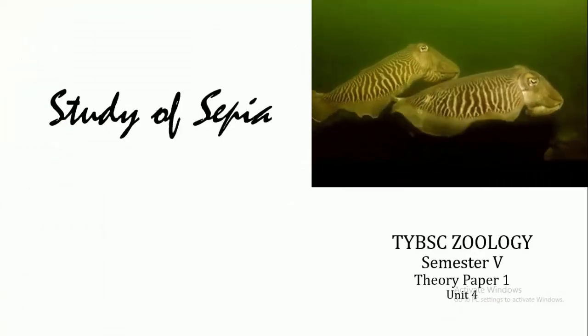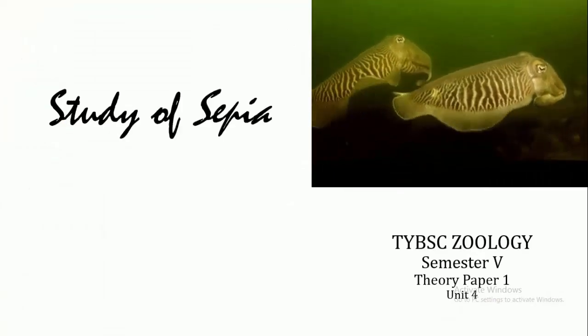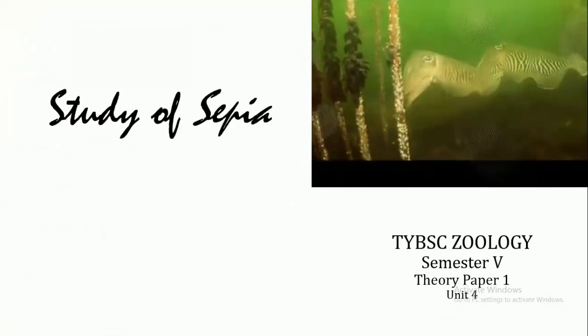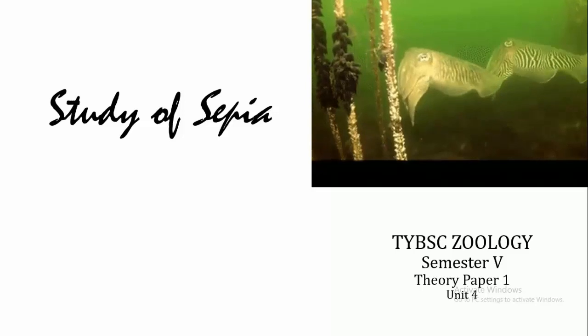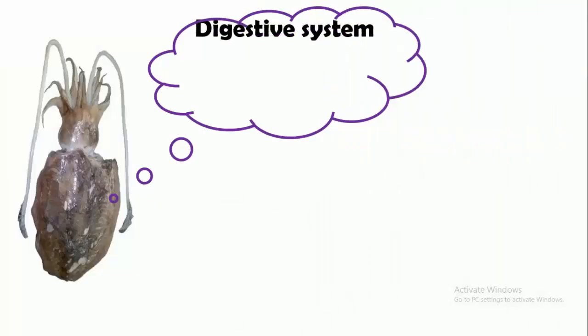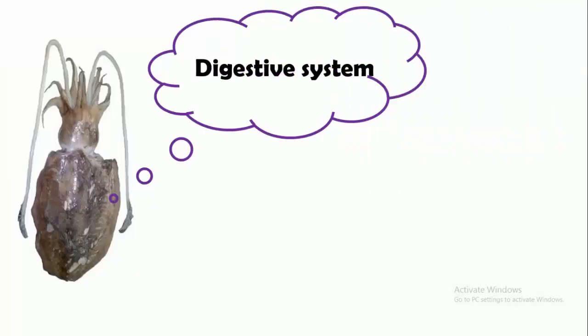Hello students, today we will be learning about Sepia. We will look at the digestive system, which consists of an alimentary canal and associated glands.